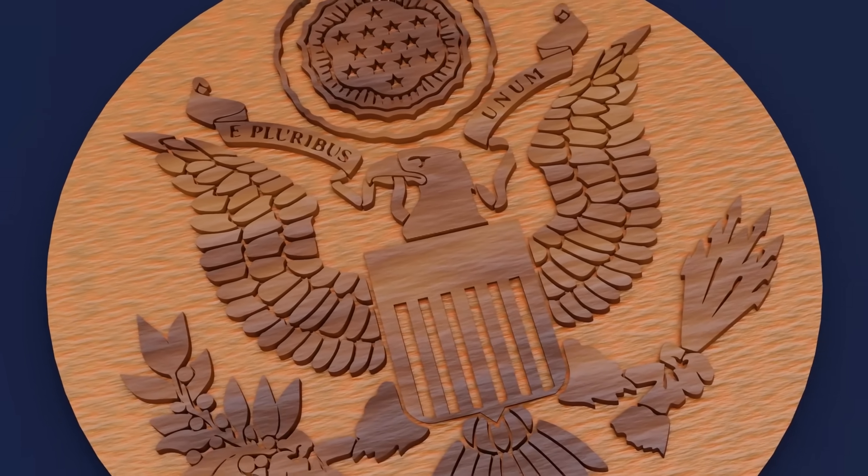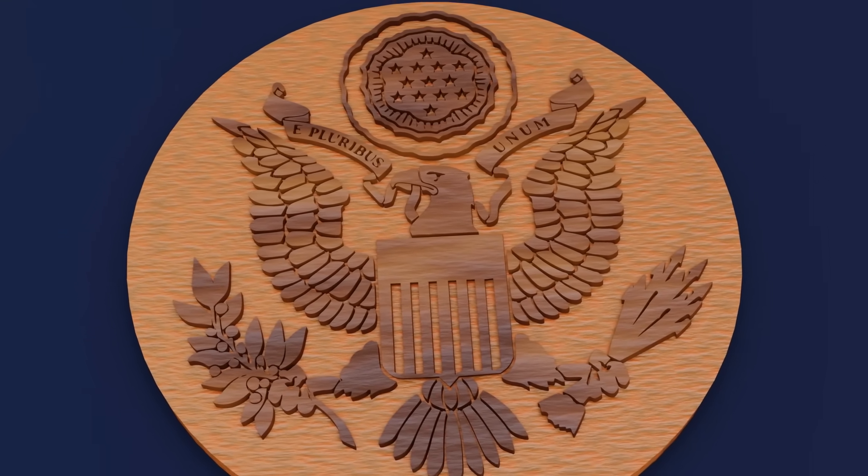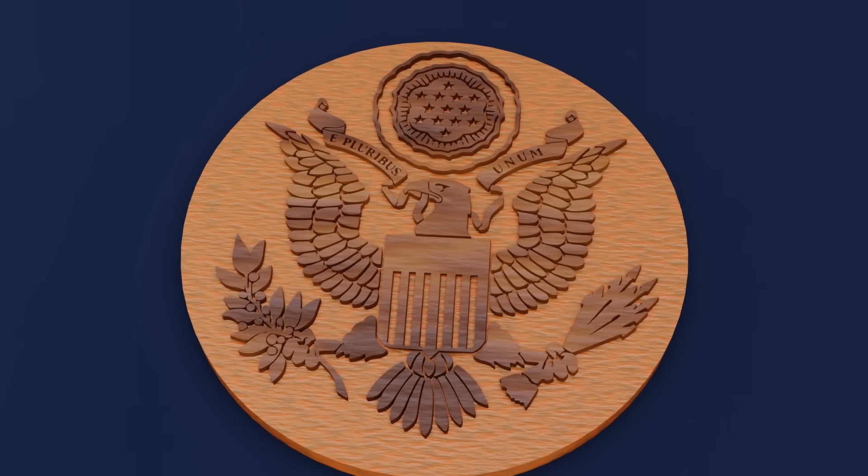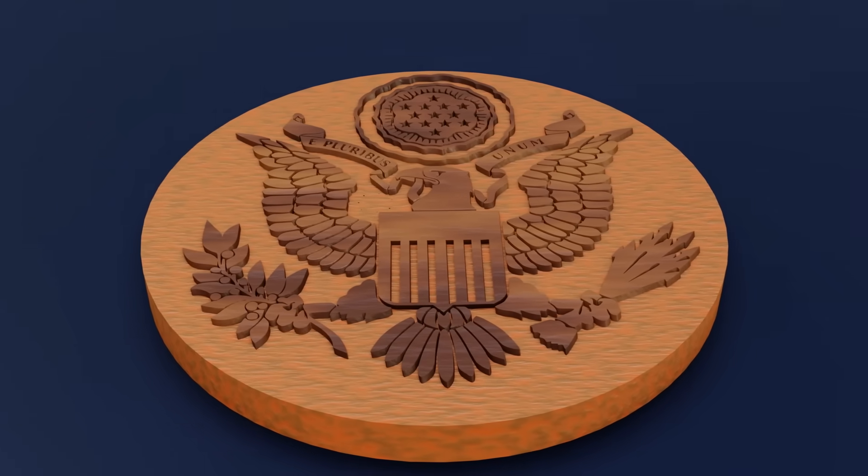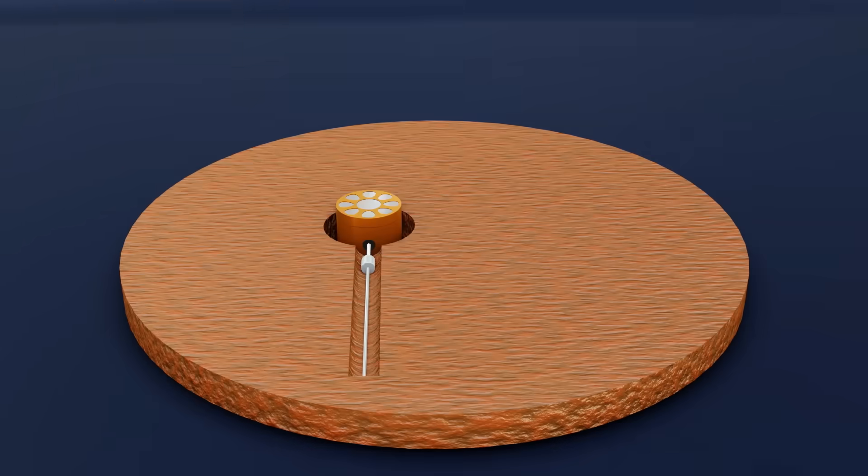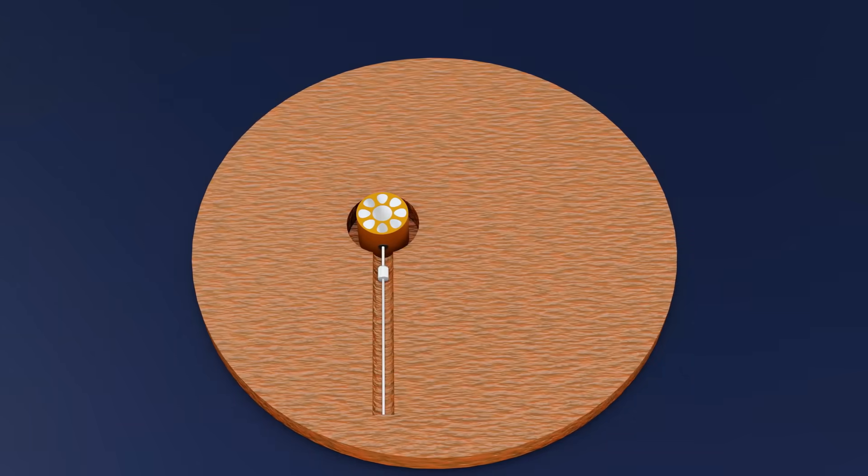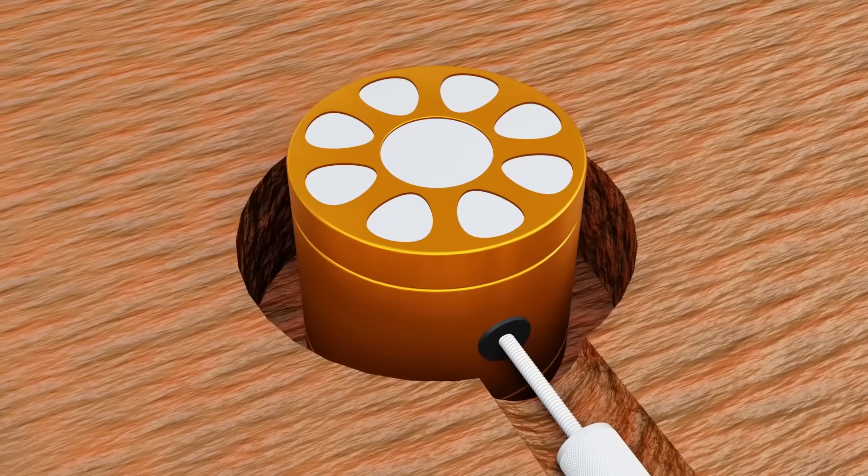In 1945, Soviet school children presented a handcrafted wooden plaque of the Great Seal of the United States to the U.S. Ambassador in Moscow. But hidden inside this seemingly innocent gift was a highly sophisticated listening device, one unlike any conventional spy bug.